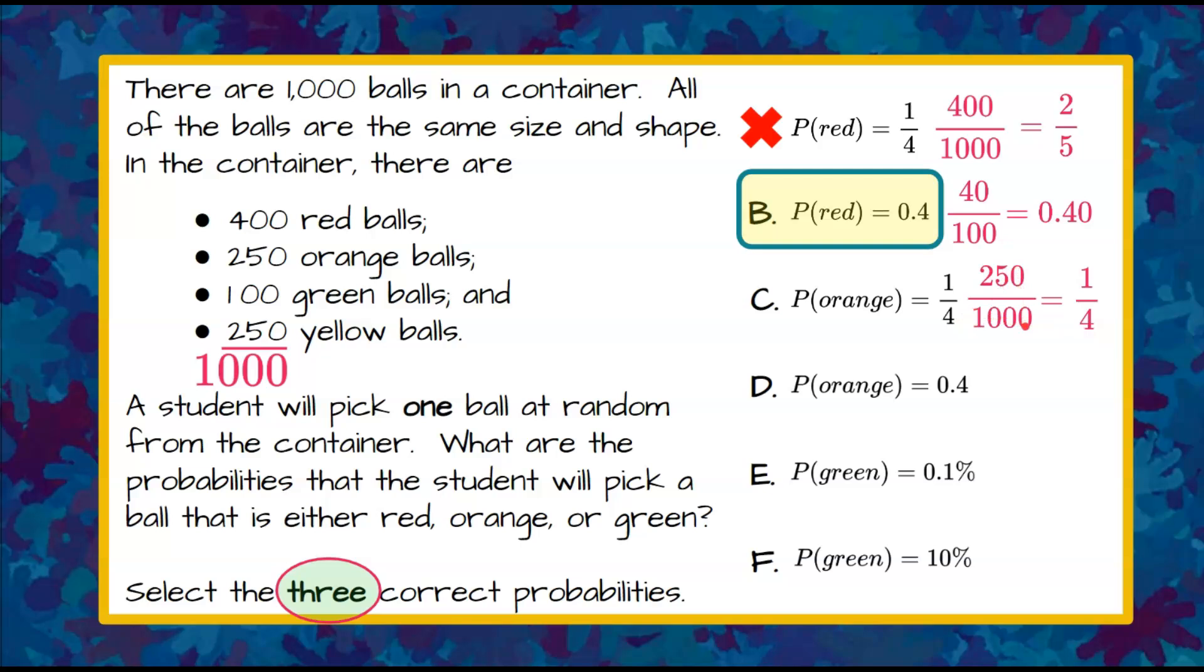If I also divided by 10, I would see that's 25 hundredths or 25% or 0.25, and that is not equivalent to 0.4. Therefore I know that C is a correct answer and D is an incorrect answer.